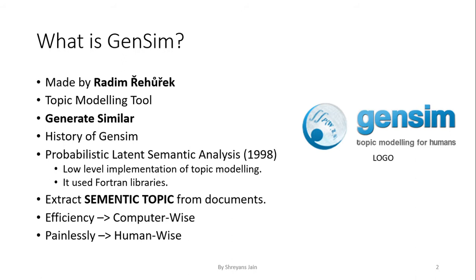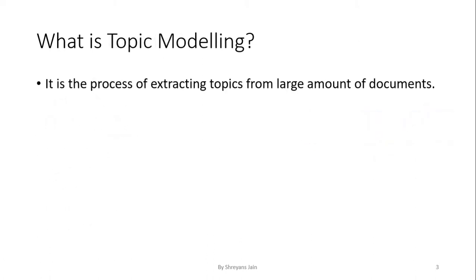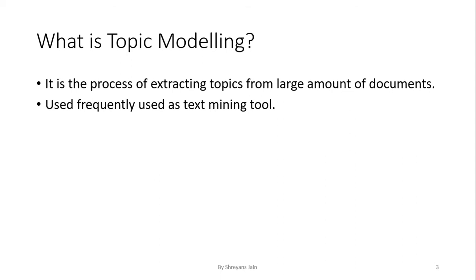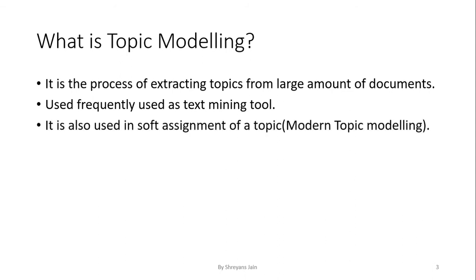Before we go further on Gensim, let's talk about what is topic modeling. It is the process of extracting topics from given documents. It is a statistical model for discovering the abstract topics that occur in a collection of documents. It is frequently used in text mining tools for discovering hidden semantic structures. For example, if a document contains 90% cat words and 10% dog words, then we can say that the document is about cats. Similarly, there is something called soft assignment, which is also a modern topic modeling method.